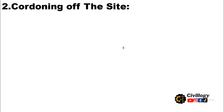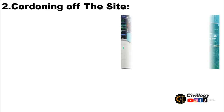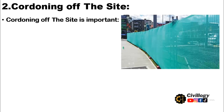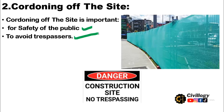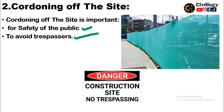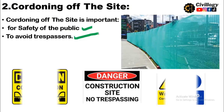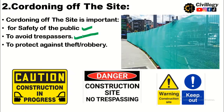The next step is cordoning of the site. This is very important for the safety of the public, to avoid trespassers, and to protect against theft and robbery. Warning signs and caution signs should be installed at suitable places visible to every person passing by.